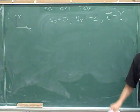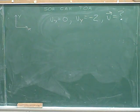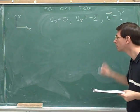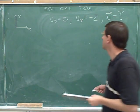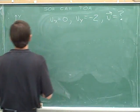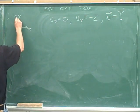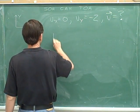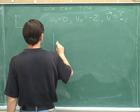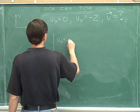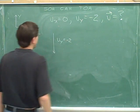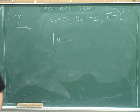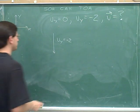Let's try this problem. Let's draw the y component. Up is positive, and the y component is pointing in the negative direction, which is down. So here's the y component. And since there is no x component, the overall vector has a magnitude of 2.